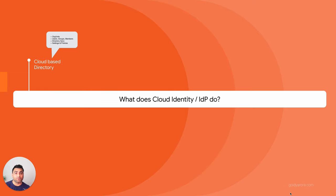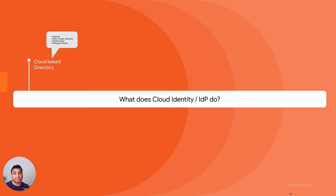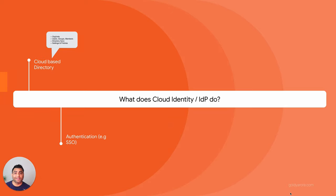It also offers directory sync. In case you already have a directory like Microsoft AD or OpenLDAP, you can install this directory sync tool behind your firewall to take all those identities locally and put them into the Google Cloud directory. You can have the sync run on a schedule by itself, and you can also apply settings and policies right in the admin console.